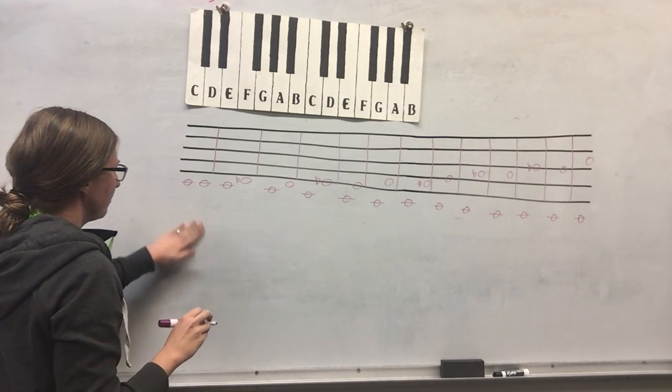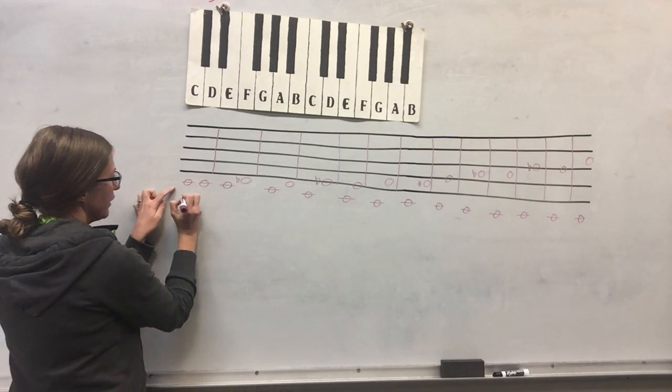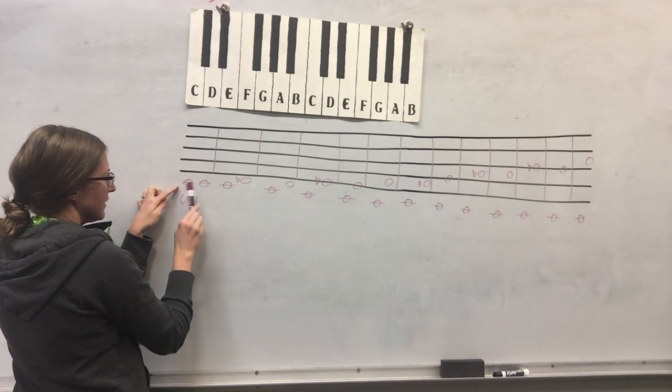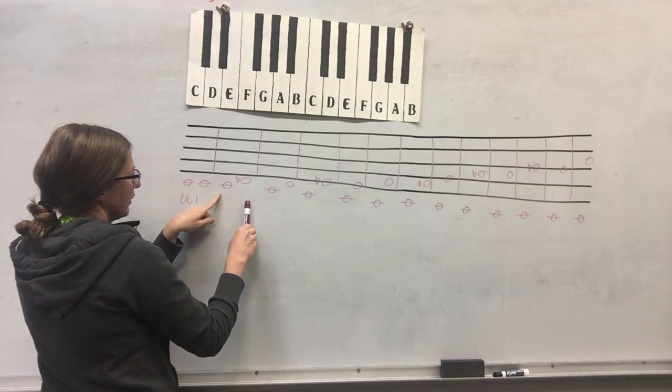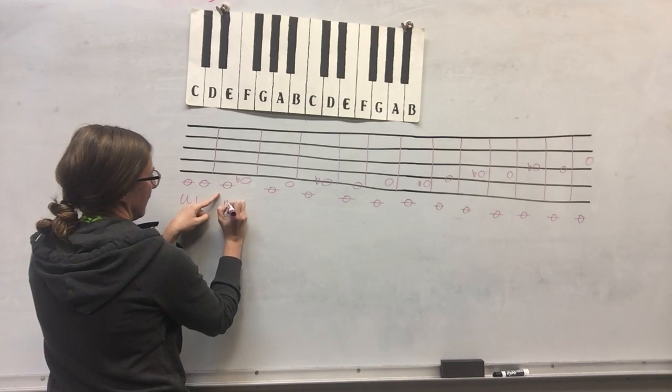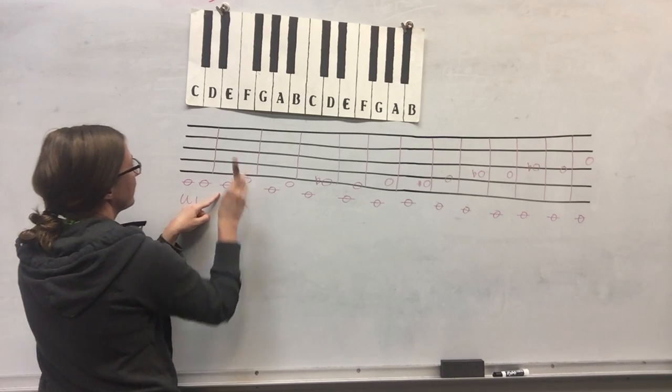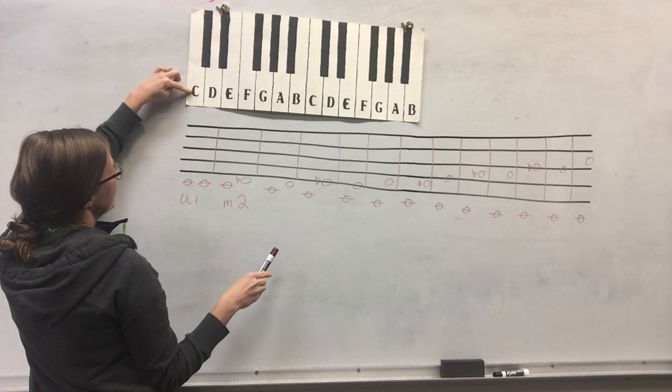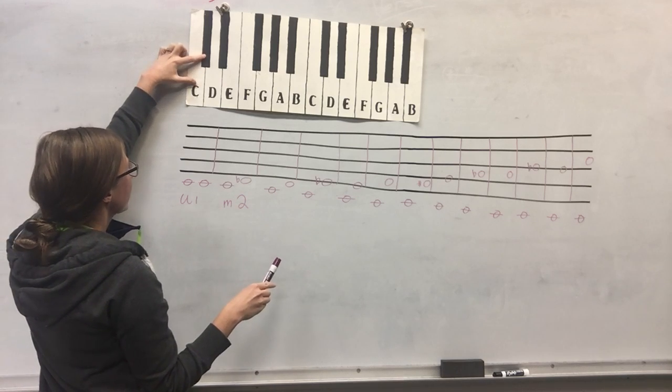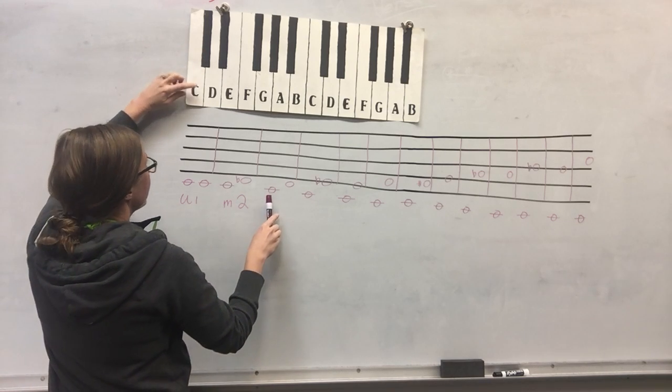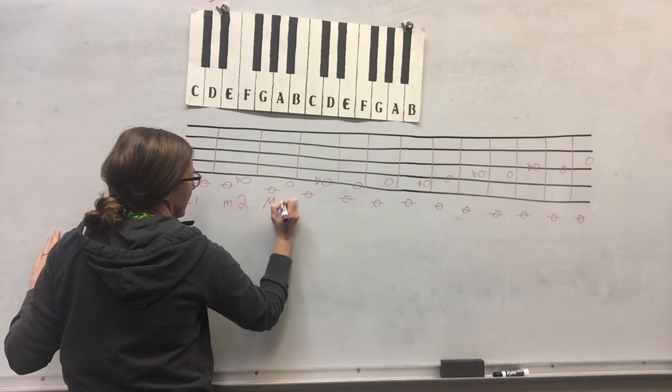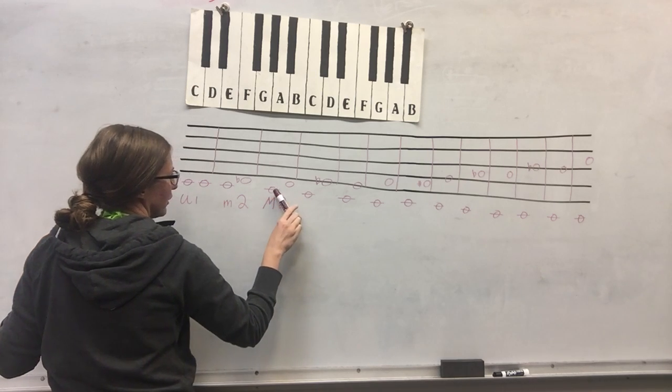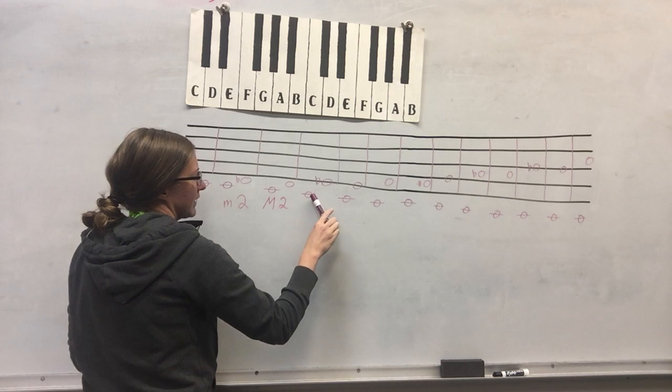The first one is the unison because C to C is the same note, it's in unison. Next we're going to have a minor second, and that's going from C to D flat, so it's like a half step. Our next one, C to D, is like a full step and it is a major second because I'm moving one, two.